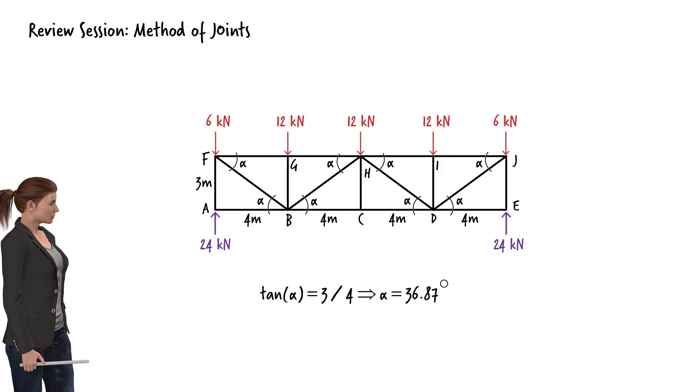To start calculating the member forces, we need to locate a joint with at most two unknown member forces. Keep in mind that for each truss joint we can only write two equilibrium equations. This means that we can only solve for two unknowns using the equations. So if we pick a joint with more than two unknowns, we may not be able to calculate all of them.